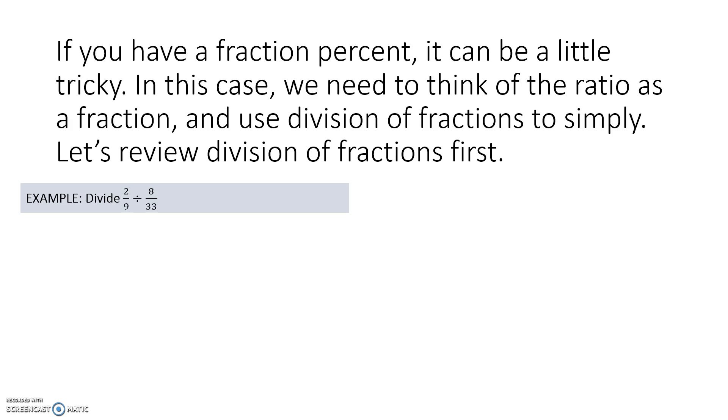Divide 2/9 by 8/33. Remember that when dividing fractions, you use what I call the KFC method, for keep, flip, change. We first write the division problem as it is. Then we're going to keep the first fraction the same. We're going to flip the second fraction from 8/33 to 33/8, and we're going to change it to multiplication. We can also look to see if there's any cross-cancellation that can be done. You'll notice that the 2 and the 8 have a common factor of 2, and the 9 and the 33 have a common factor of 3. So we remove both of those factors. Then, once we have our fractions reduced, we can multiply the numerators together and multiply the denominators together. So 2/9 divided by 8/33 leaves us with 11/12.